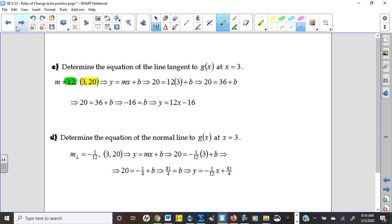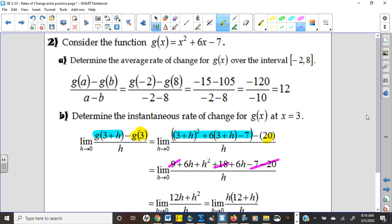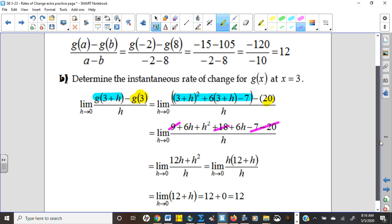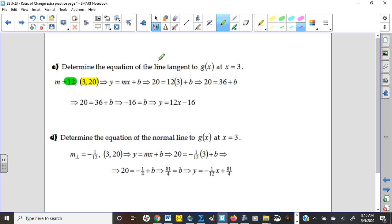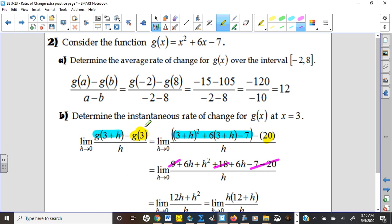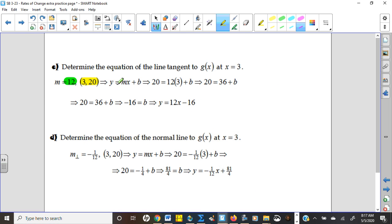Once you have your slope, which we found the slope was 12, you should be able to plug that slope in the point. Remember, you found a point here. When you did G of 3, it gave you 20. That's the point, 3, 20. Don't go back and recalculate that. You already have it. 3, 20. There's your point. There's your slope. Plug them into Y equals MX plus B, and you're done.